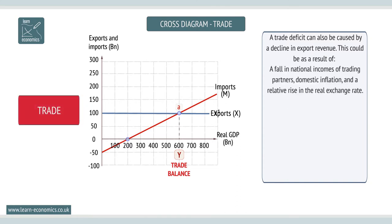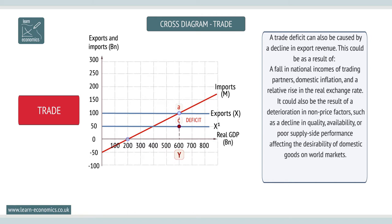This could be as a result of a fall in the national incomes of trading partners, domestic inflation, or a rise in the real exchange rate. It can also be the result of non-price factors such as poor quality or poor marketing. Trade barriers could also limit exports.